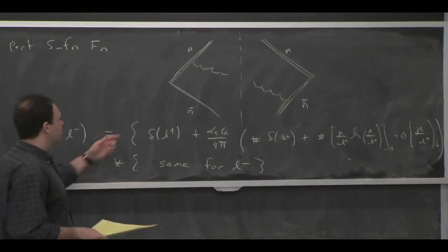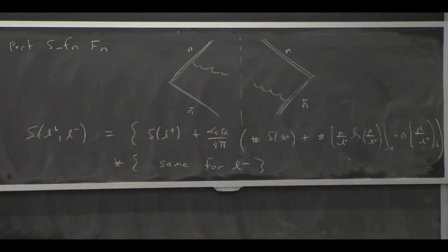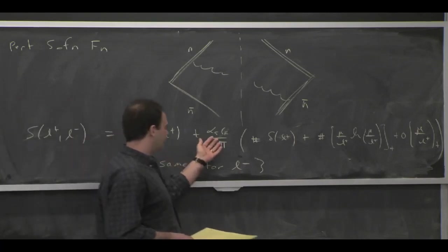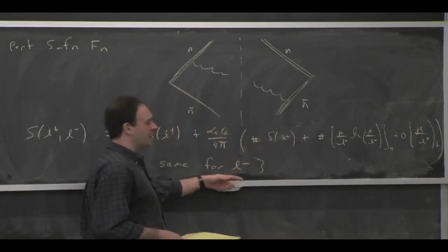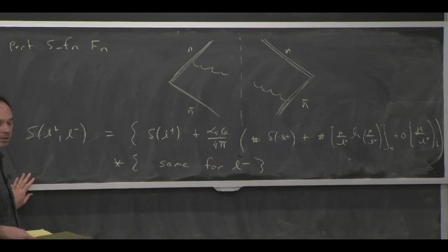And the reason that happens is if you only have one gluon, it's either in hemisphere A or hemisphere B. It can't be in both. So the alpha-s corrections are either a function of L plus or a function of L minus. And that's why it has a kind of very simple structure at one loop.